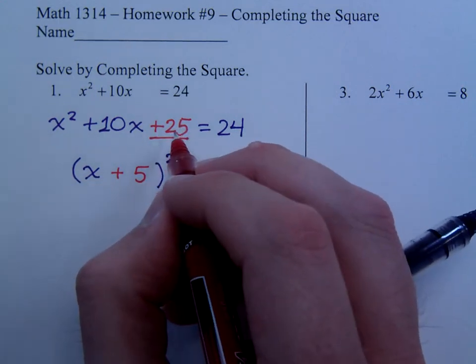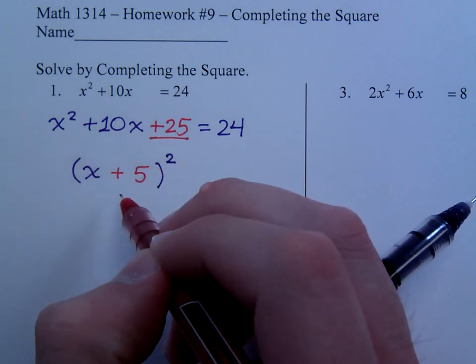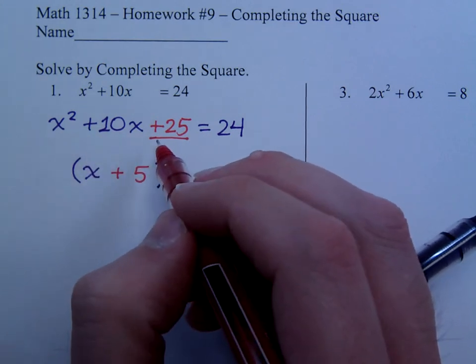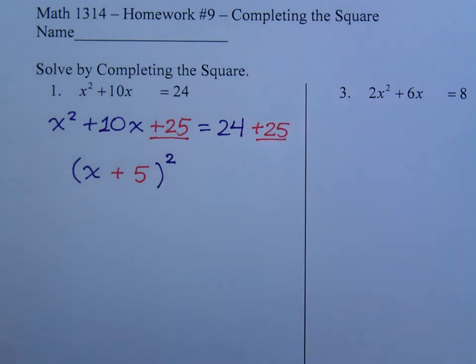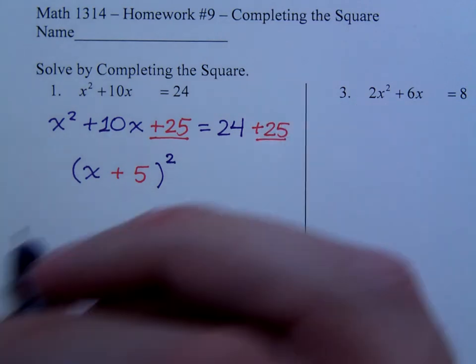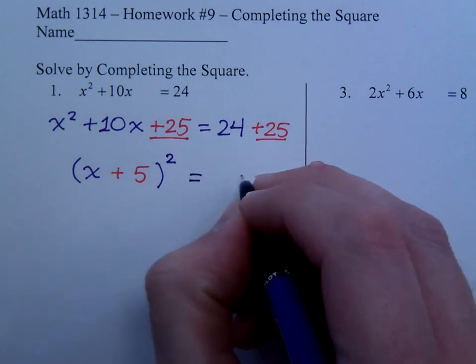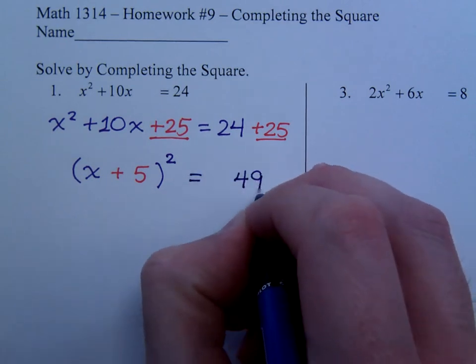Now, by putting the plus 25, that allows the left side to factor. But I can't just add 25 to an equation. What I do to one side, I must do to the other side.